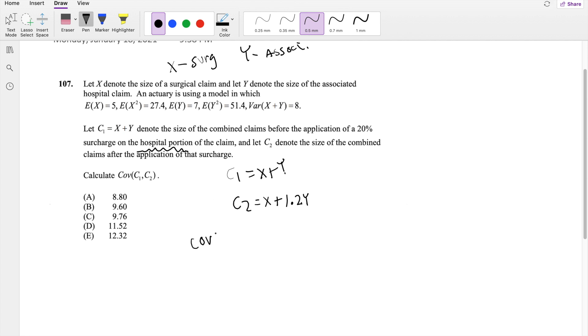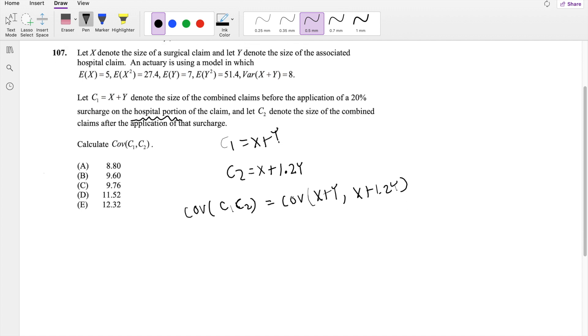So covariance of C1 and C2. This is equal to the covariance of just plugging this in, X plus Y comma X plus 1.2Y. And this is kind of like the foiling rule, where you want to just make sure you take care, this is equal to the covariance of X and X.